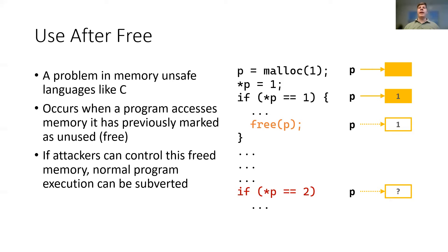What happens in this case depends on the allocator's behavior. While the bug is apparent in this simple example, UAF bugs can be difficult to spot in real code. The free may occur far away from the use. Indeed, the call to free may not even be explicit in the code and instead be silently hidden away inside a call to realloc.